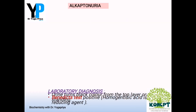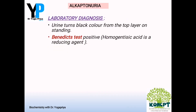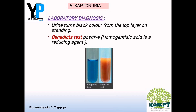Regarding laboratory diagnosis of alkaptonuria, first we inspect the patient sample, which is normal in colour immediately after collection. Within a few minutes, darkening or blackening sets in from the topmost layer and progresses to the bottom. The next important test is Benedict's test, which is positive in alkaptonuria because homogentisic acid is a reducing agent. In this picture you can see the positive test giving a greenish brown precipitate.